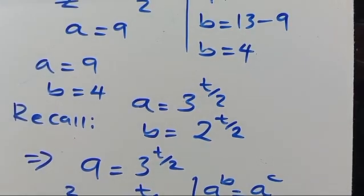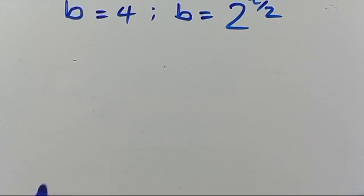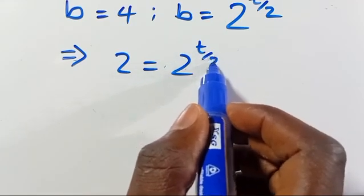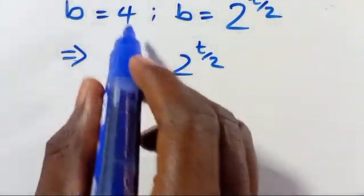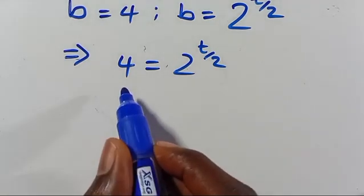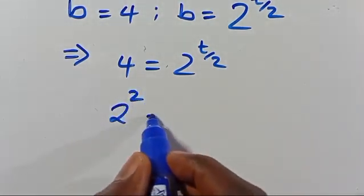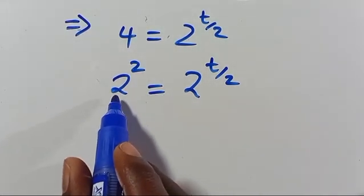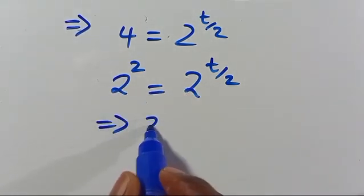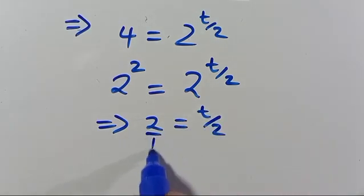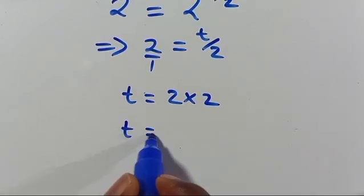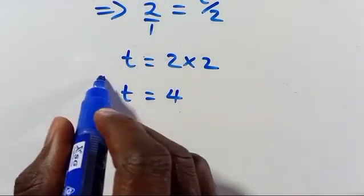We also consider this for b. Since b equals 2 to the power of t over 2 and b equals 4, we have 2 to the power of t over 2 equals 4. Writing 4 in base 2 as 2 squared, we get 2 to the power of t over 2 equals 2 to the power of 2. Equating the powers gives t over 2 equals 2, so t equals 4. We get the same solution as before.